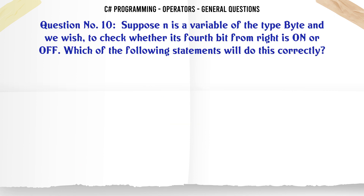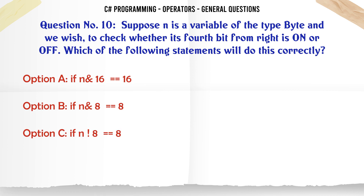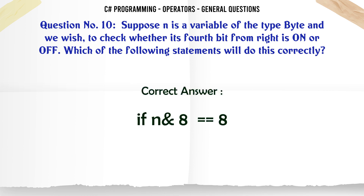Suppose n is a variable of type byte and we wish to check whether its 4th bit from the right is on or off. Which of the following statements will do this correctly? A: 1, 2, 3. If (n & 16) == 16, console.WriteLine("4th bit is on"). The correct answer is: if (n & 8) == 8, console.WriteLine("4th bit is on").